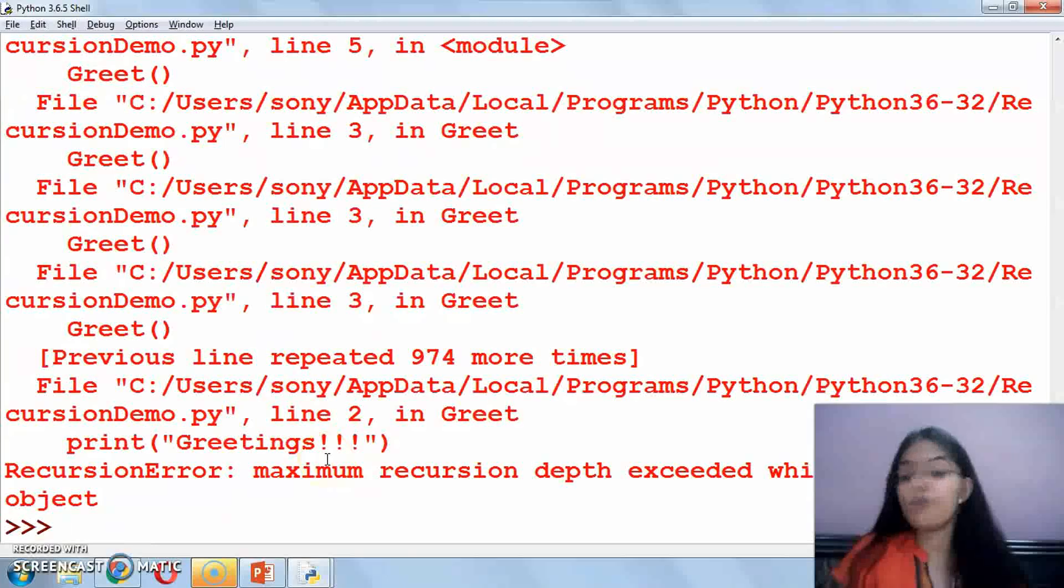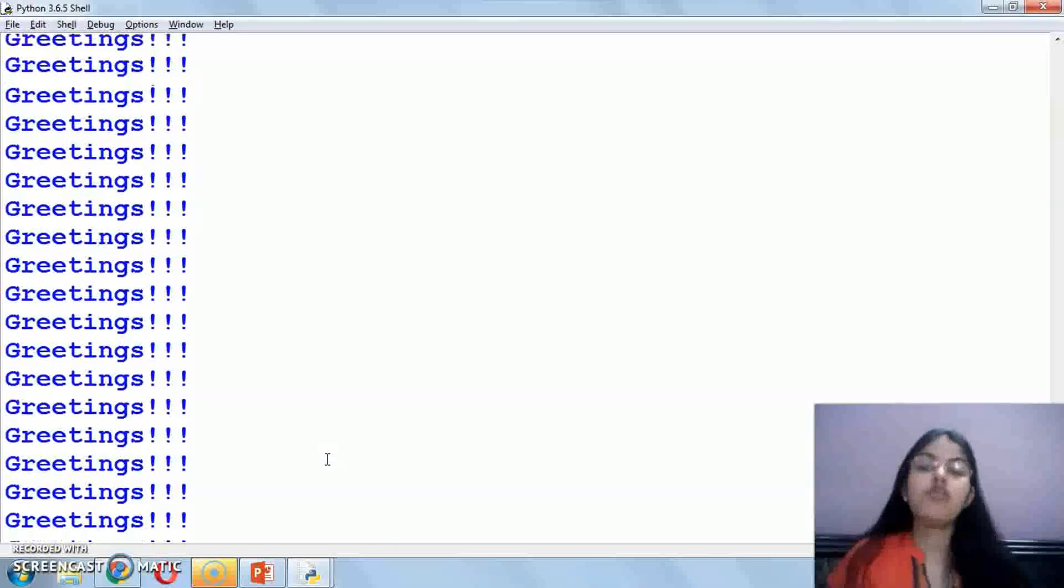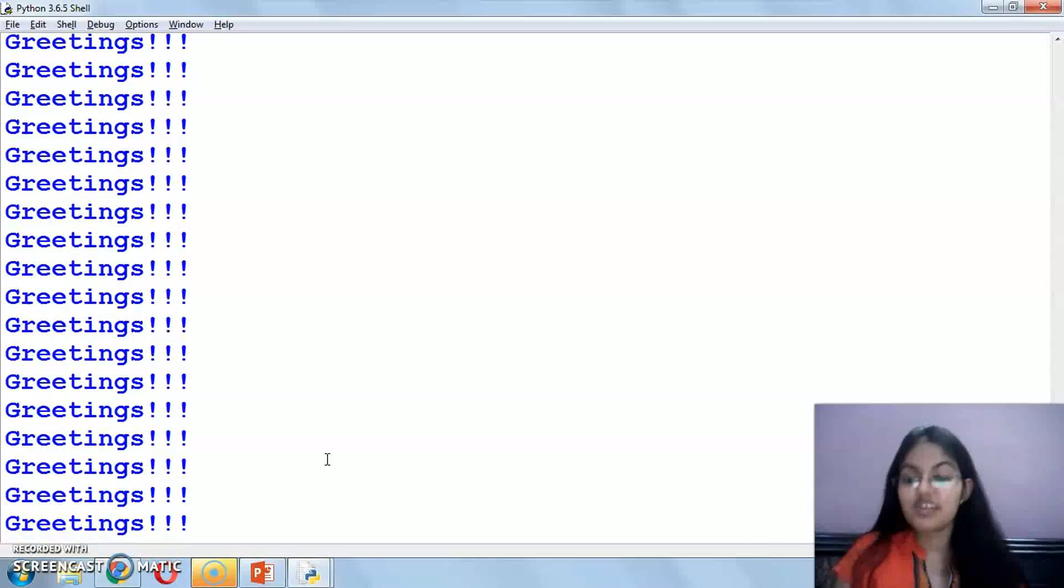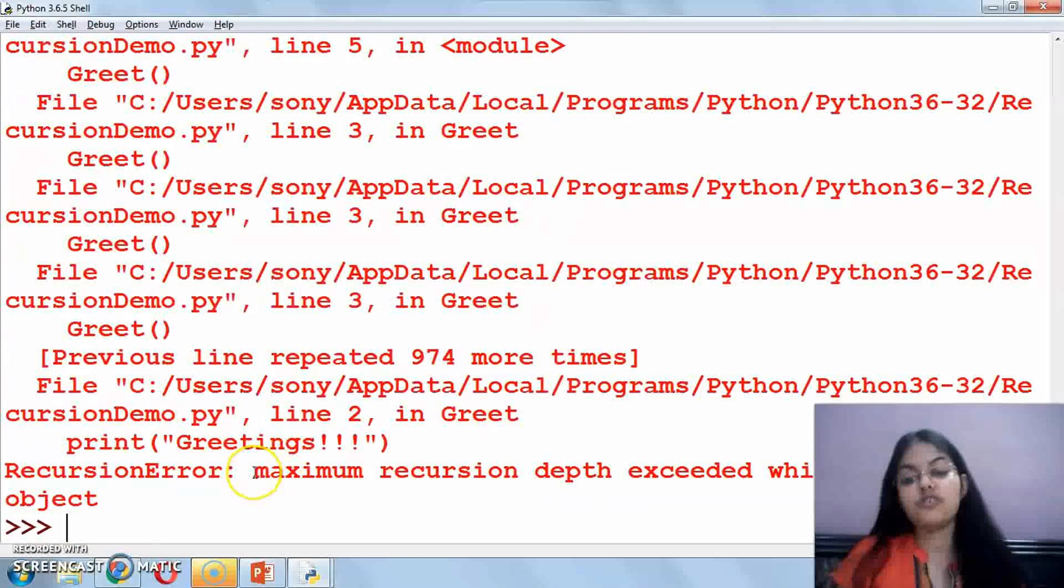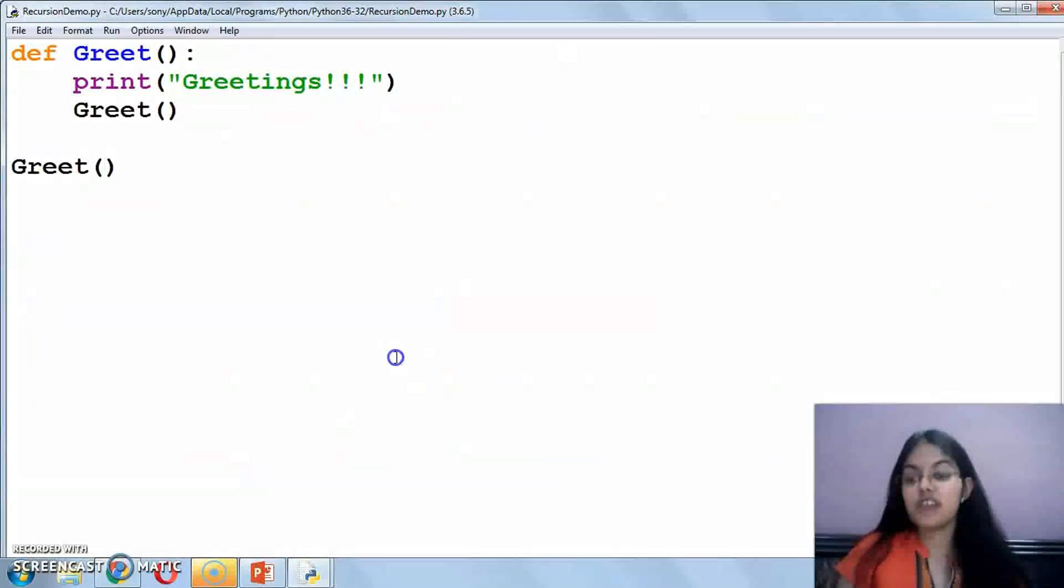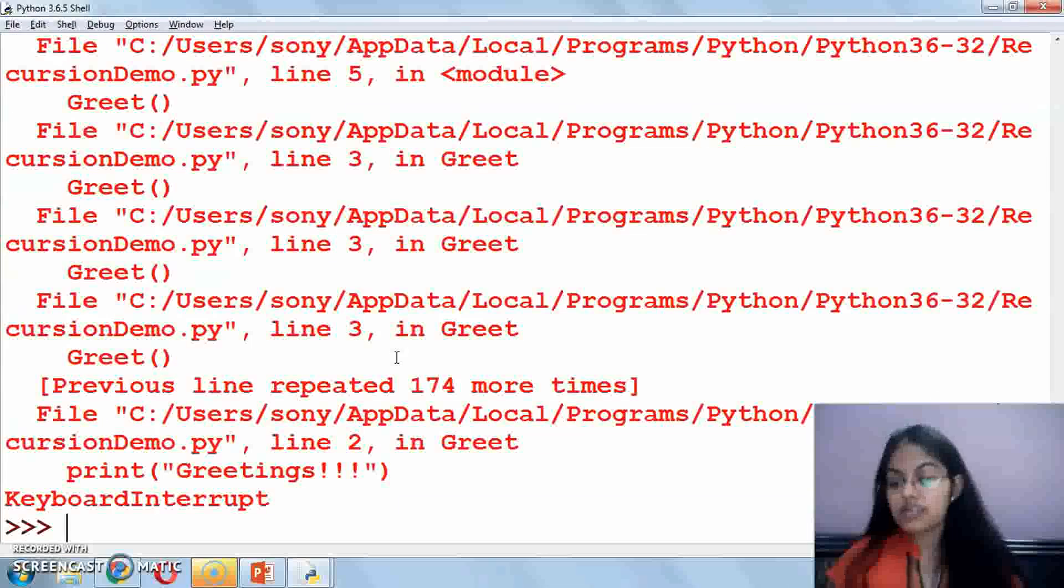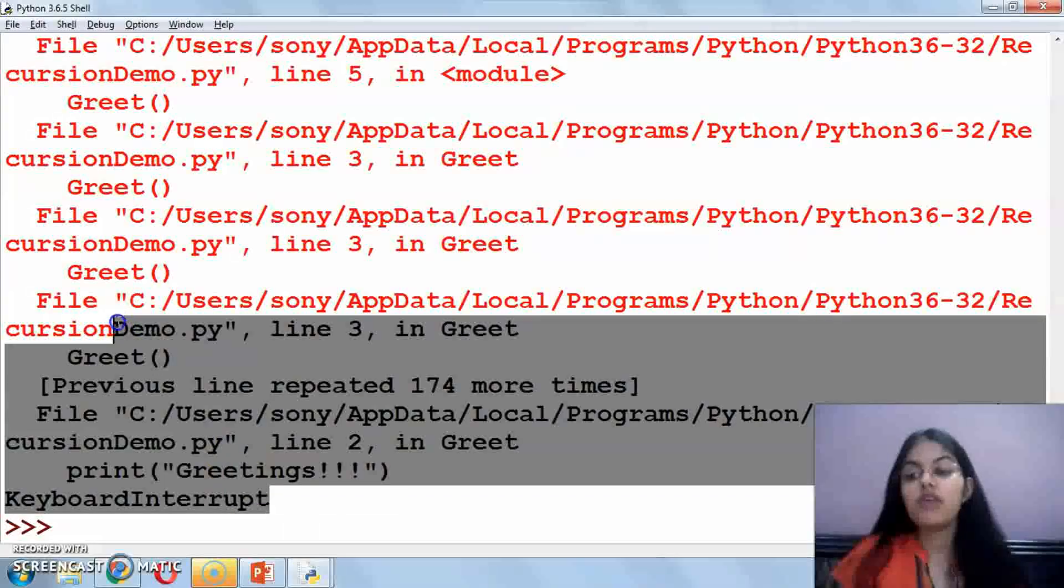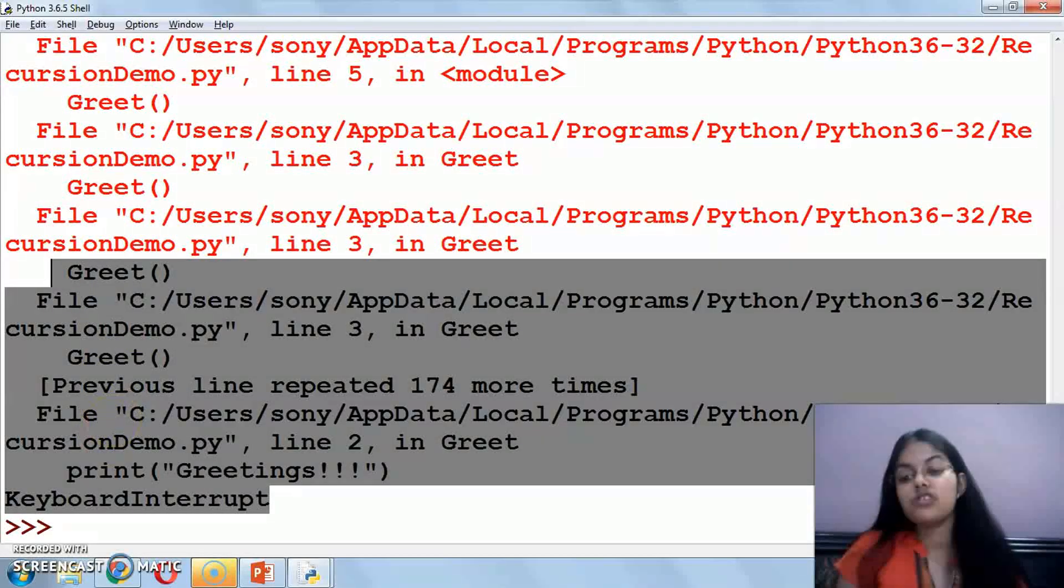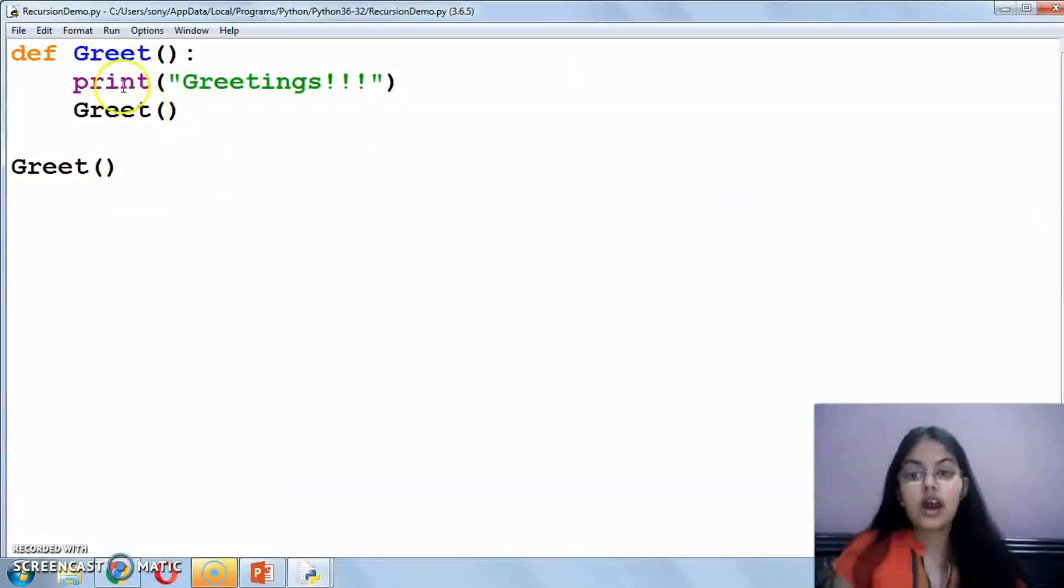In other languages like C or C++, the program would continue executing. But in Python, there is a flexibility. When it reaches the maximum recursion depth, it will stop. The second way to stop it is to press Control plus C for keyboard interrupt. If any infinite loop is running through recursion or iteration, you can press Control C to exit from there. You can see the same function greet is calling itself. That is called direct recursion.